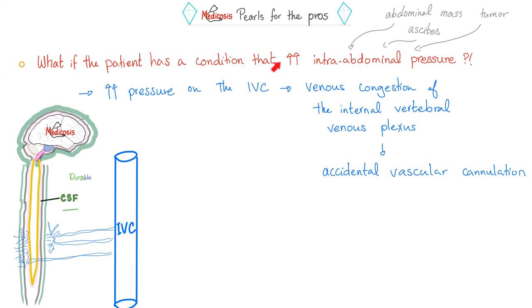Complications of spinal anesthesia: hypotension (may cause shivering) — because you block sympathetic arteriolar and venous constriction, decreasing venous return and cardiac output; hypoventilation; backache; bradycardia to the point of asystole (parasympathetic is unopposed — consider atropine); post-dural puncture headache; urinary retention (blocked sensory fibers, cannot feel bladder distending); nausea and vomiting; itching; neurological complications; and total spinal anesthesia.